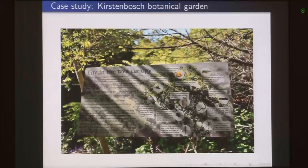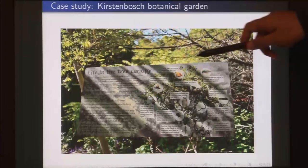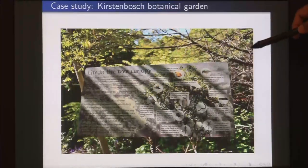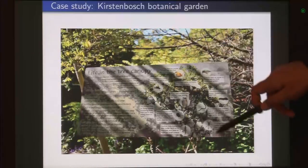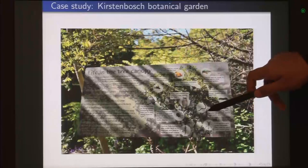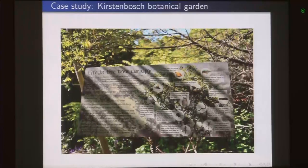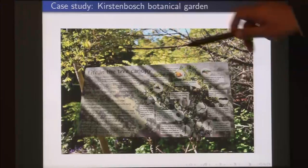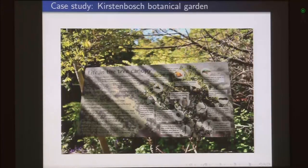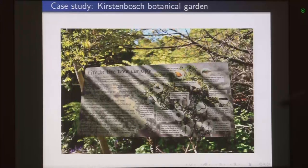The canopy walk also provides information about life in the tree canopy. A board tells you different kinds of life forms that live in the canopy — birds, butterflies, insects, spiders, snakes, reptiles, and so on — and what their role is in the maintenance of this ecosystem or habitat. Essentially, the canopy provides shelter for all of these life forms and all of these life forms in effect are also supporting the canopy. When you are there and observe all of these life forms together, and then are given this information, it remains in your brain for a very long period.